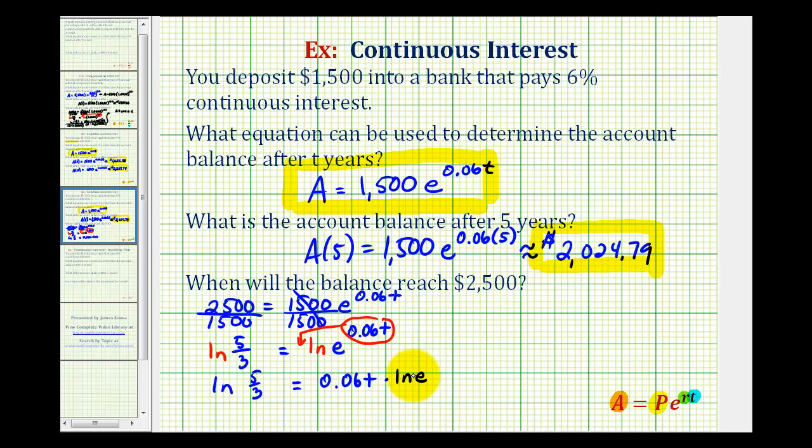So most of the time, we won't even write this. So to solve this for t, we'll divide both sides by 0.06. So on the right side, this simplifies to one t or just t.